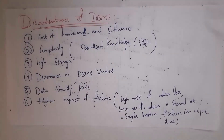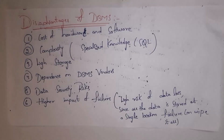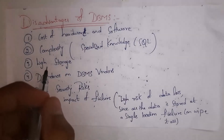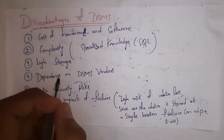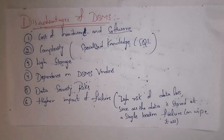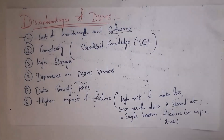Next I will explain disadvantages of DBMS. The first disadvantage is cost of hardware and software. To install DBMS software, your system must have high hardware — high hard disk, high RAM, high processors, and so on. You first need to purchase hardware. Additionally, many DBMS softwares are not free — some are costly — so you need to spend money to purchase the software.